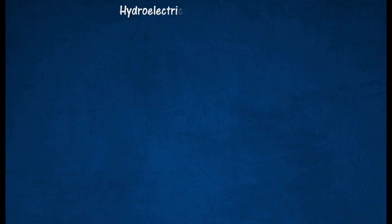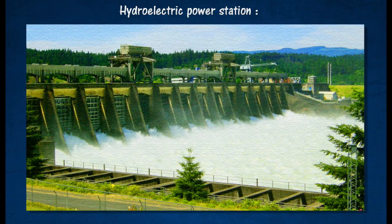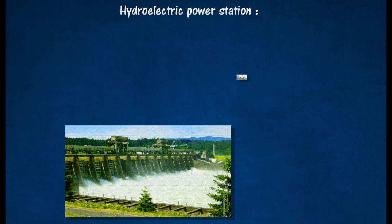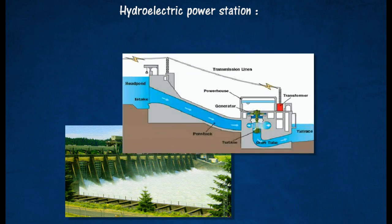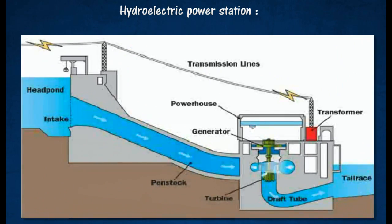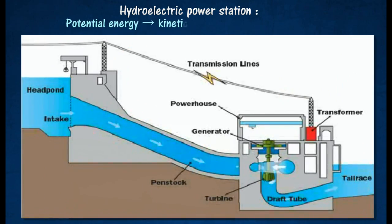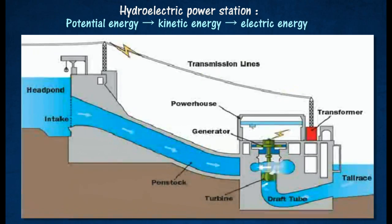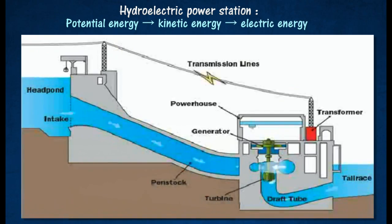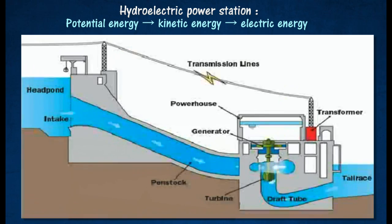In a hydroelectric power station, a huge dam is built across rivers to contain water. When the water in the dam is allowed to flow down to a lower level, the kinetic energy of the moving water is used to drive water turbines, which in turn drive the generators to produce electricity.